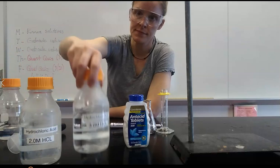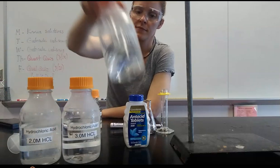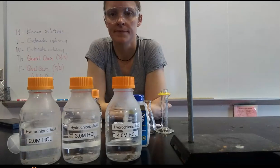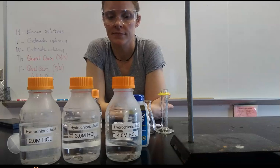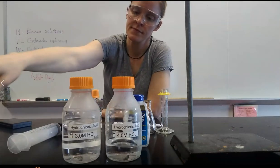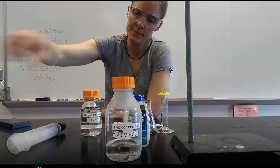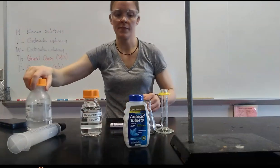You're going to use the 6 molar hydrochloric acid to prepare either a 2, 3, or 4 molar hydrochloric acid by performing a dilution. You're then going to share your solution with your neighbors so that you don't have to prep all three of those.